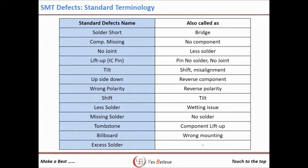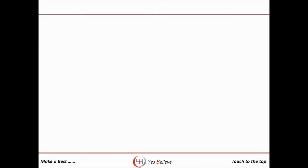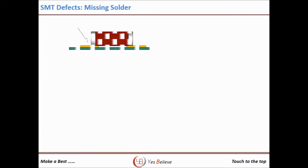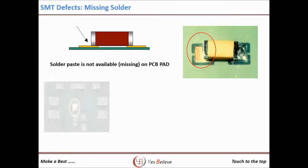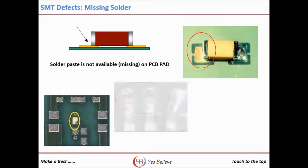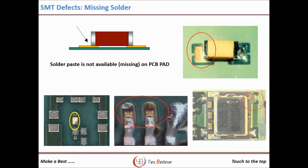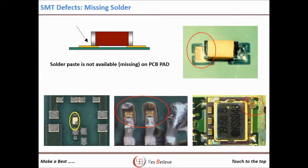Let's check the different defects that occur during SMT production. First is missing solder — here solder paste is not available on the PCB pad. This defect is related to the paste printing process. It might be caused by a stencil aperture blockage, a foreign particle, or dust on the PCB. It can also occur if the operator does not refill the solder paste on the stencil mask. If this defect occurs, first check the screen printer.